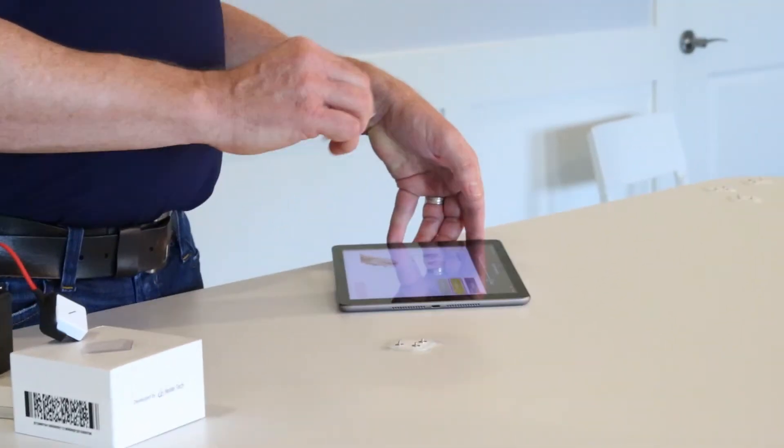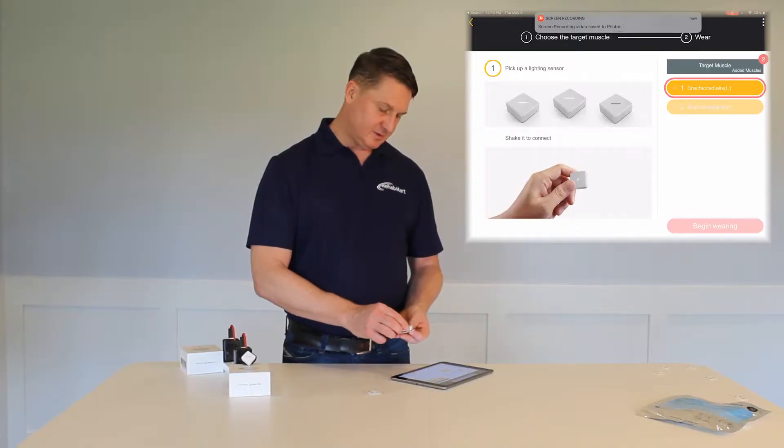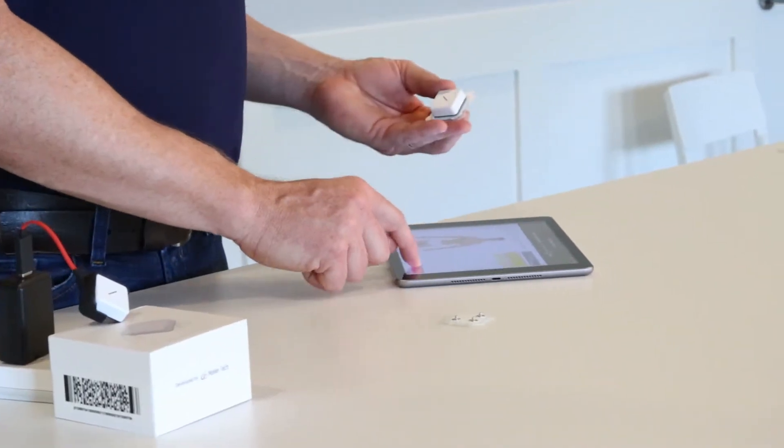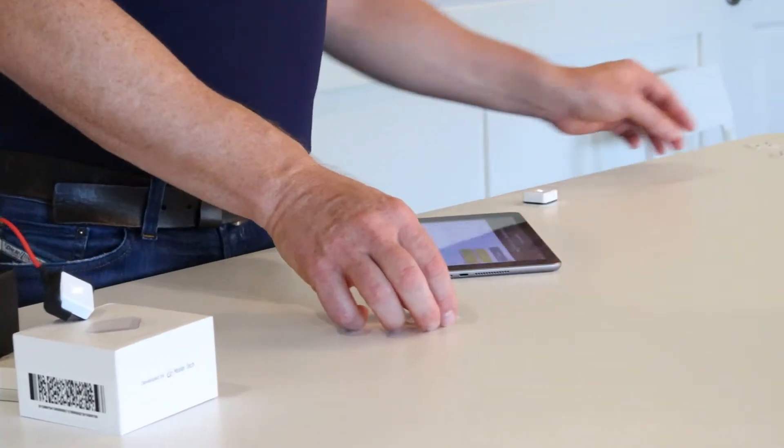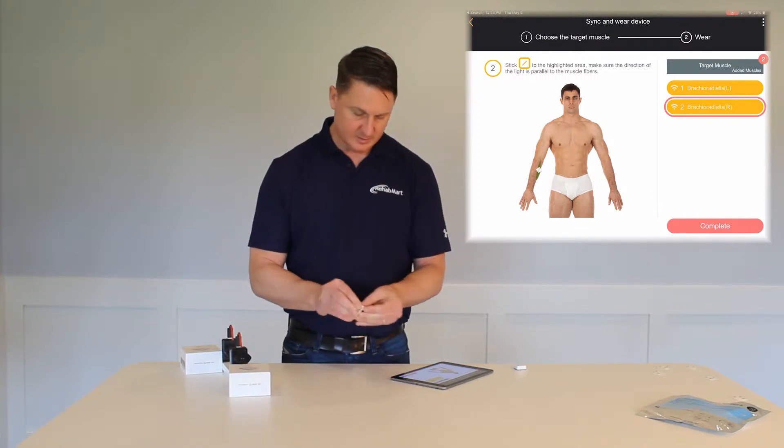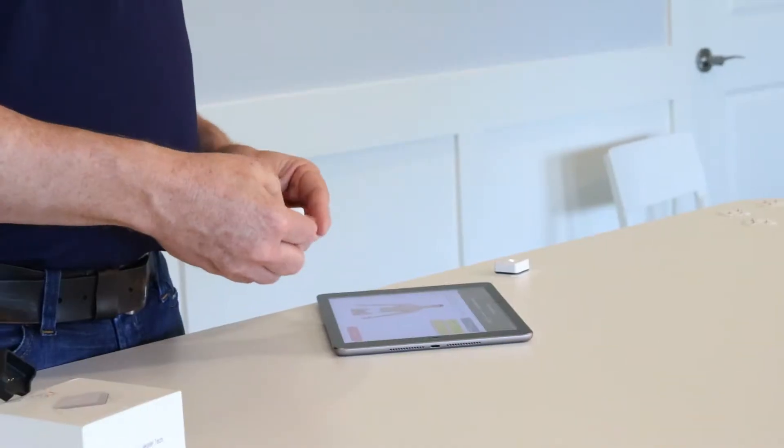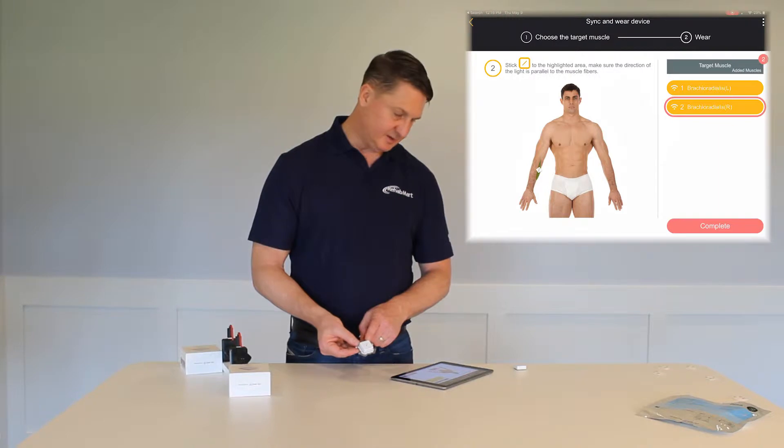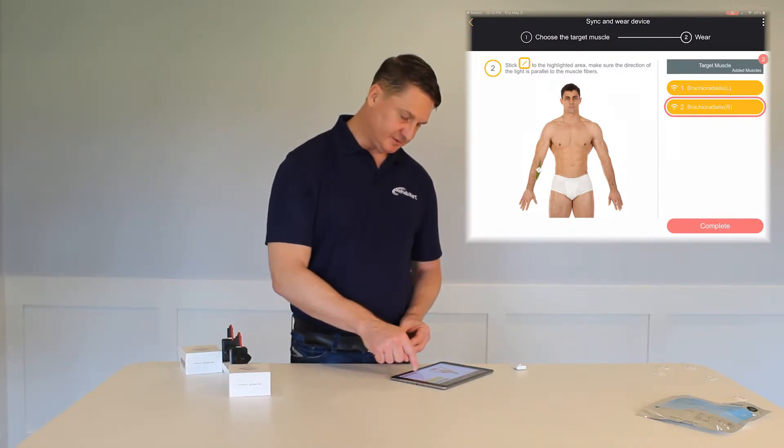I'm going to take the electrode and shake it and it should connect. I click next. Now it lets me connect the right. Shake for the right and the right is connected, indicated by a solid light. It says complete here.